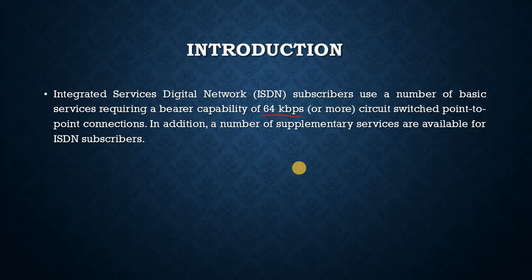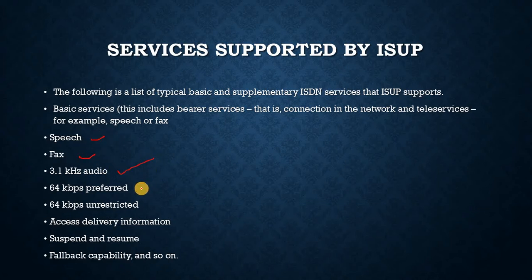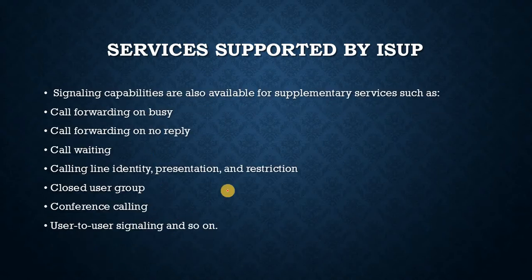Services supported by ISUP. The following is a list of typical basic and supplementary ISDN services that ISUP supports. Basic services include bearer services — that is, connection in the network but no application — and tele-services, for example speech or fax, when a network connection with application capabilities is needed. Signaling capabilities are also available for supplementary services such as call forwarding on busy, call forwarding on no reply, call waiting, calling line identity presentation and restriction, closed user group, conference calling, and user-to-user signaling.